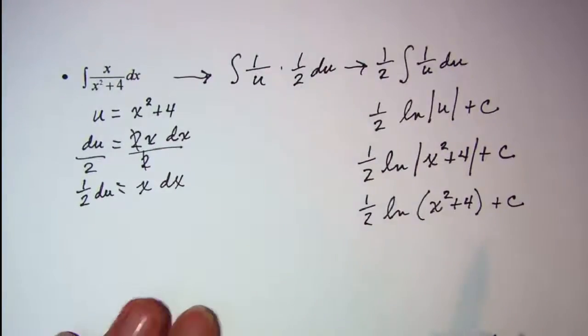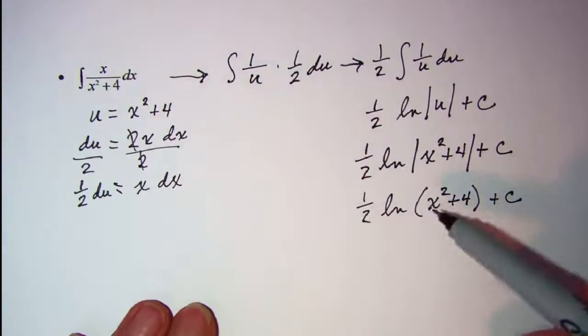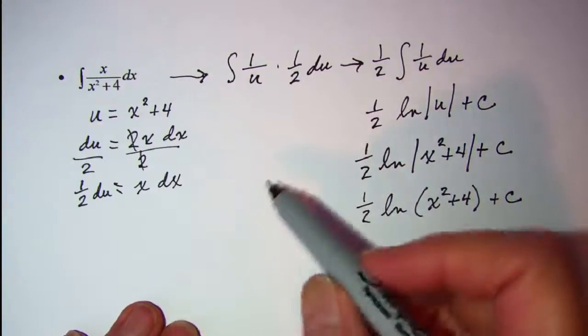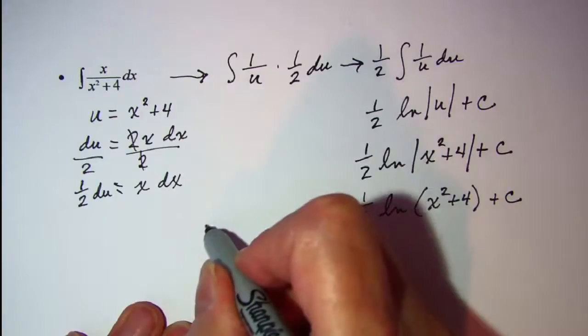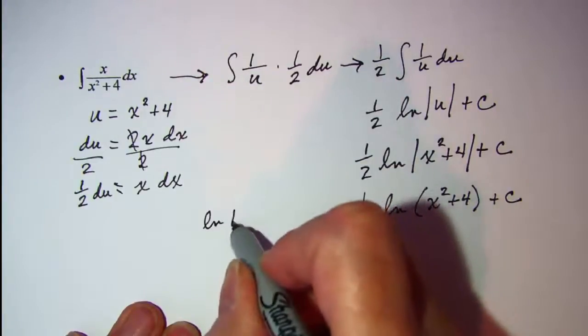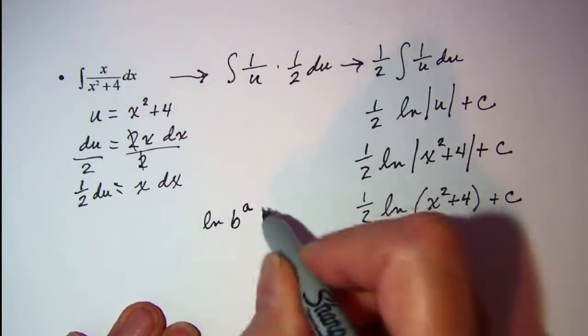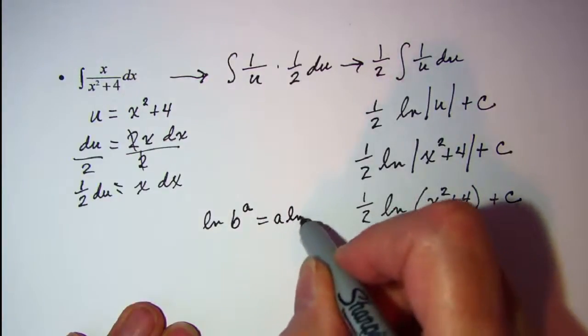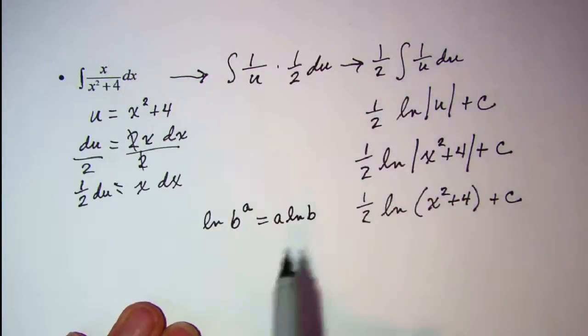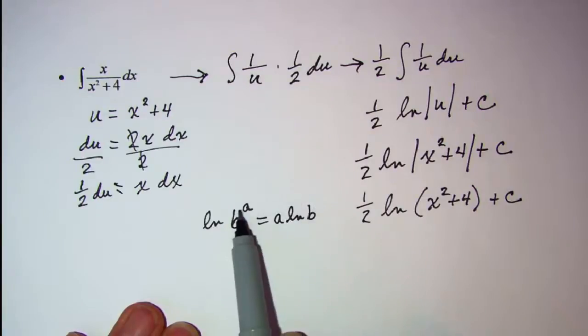And then we can simplify even further by using the rule that says if you have ln b to the a, that's the same as a times the ln of b. So my coefficient out in front of my logarithm, I can bring it up as an exponent on my argument.